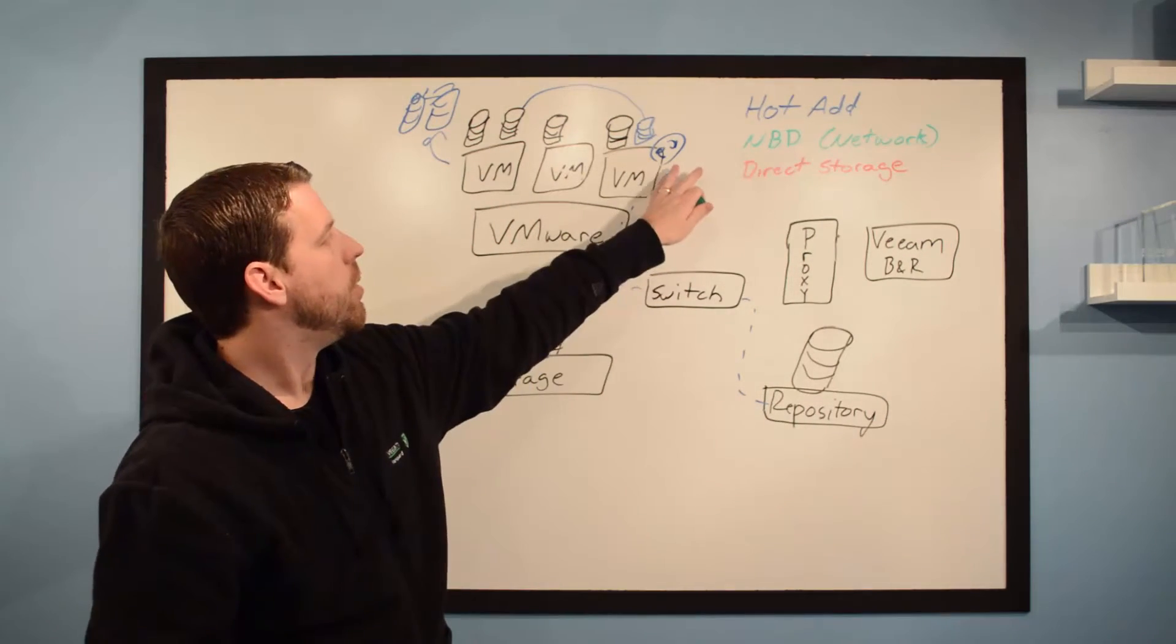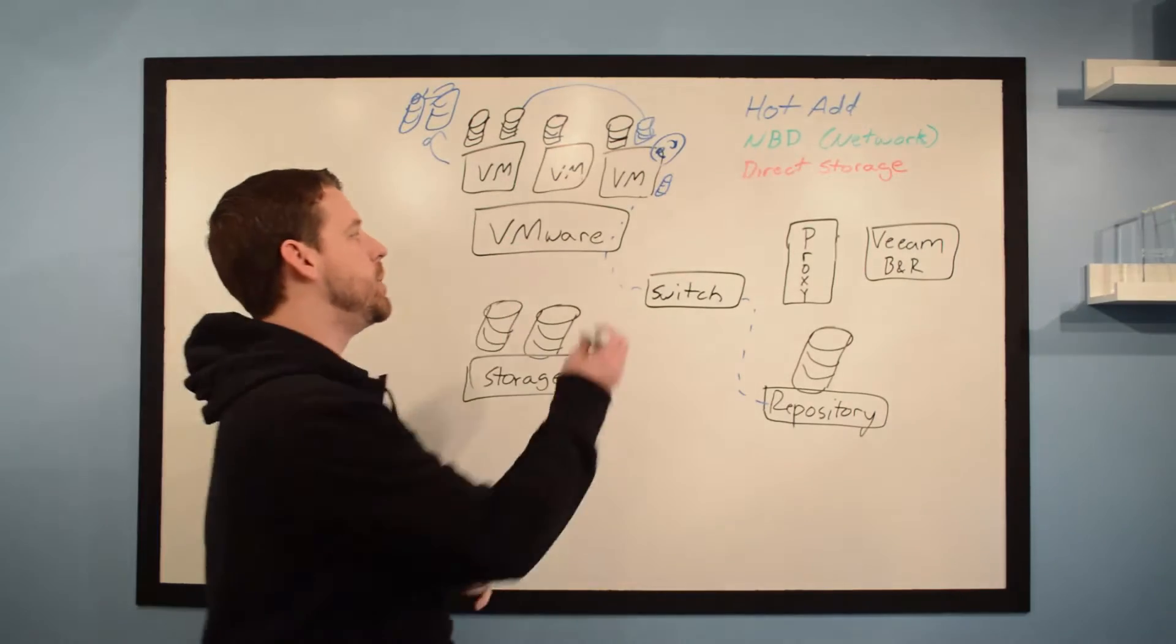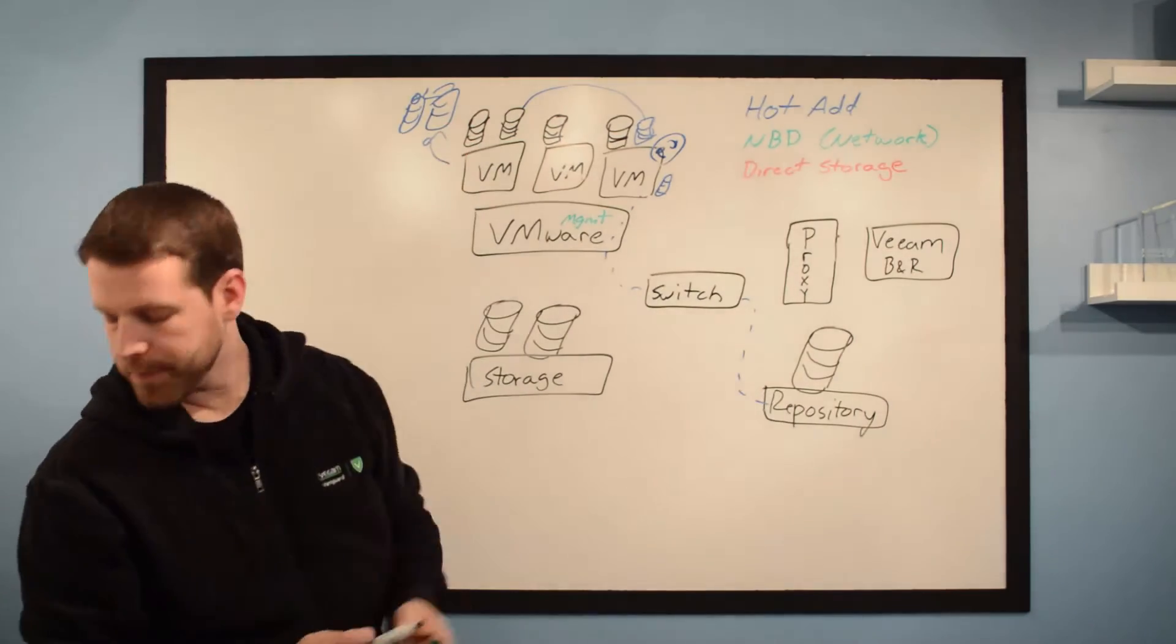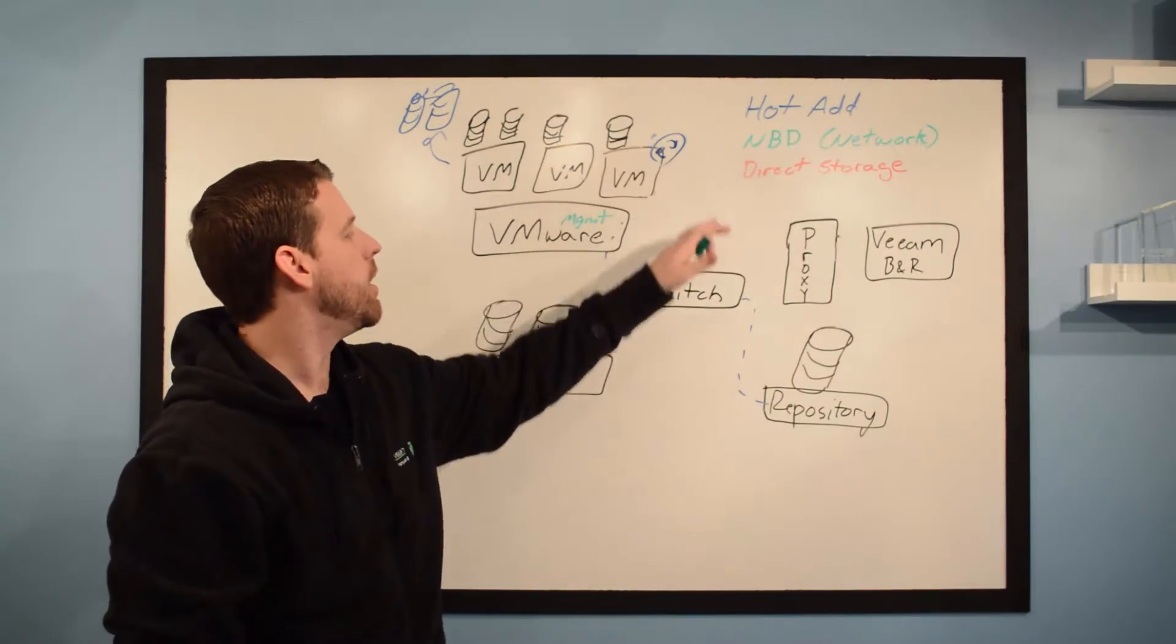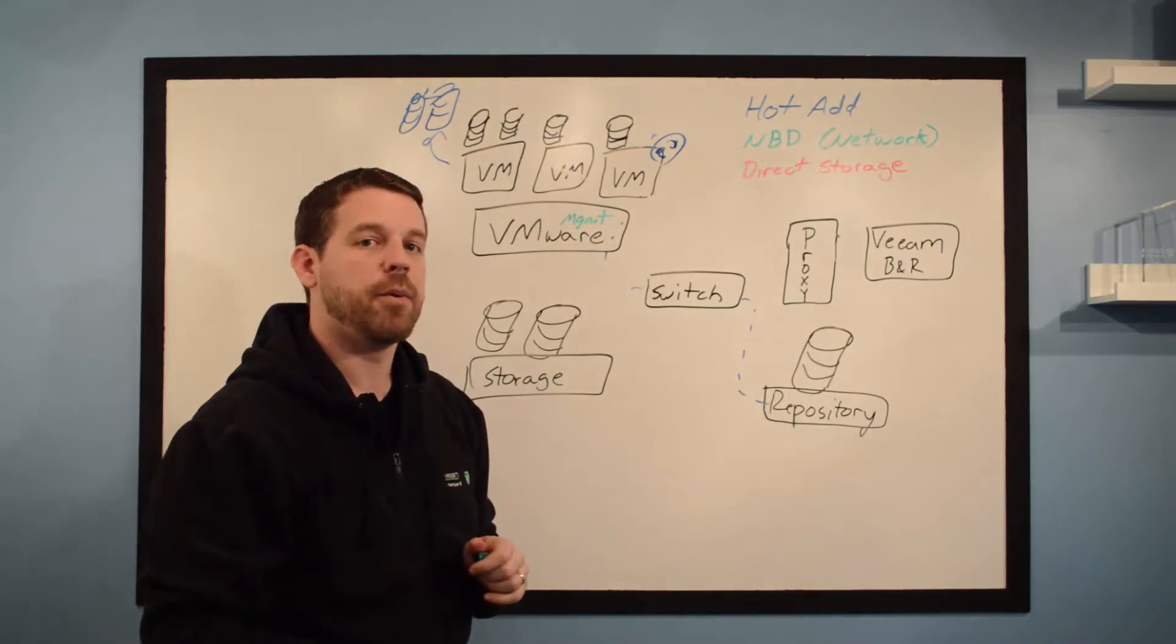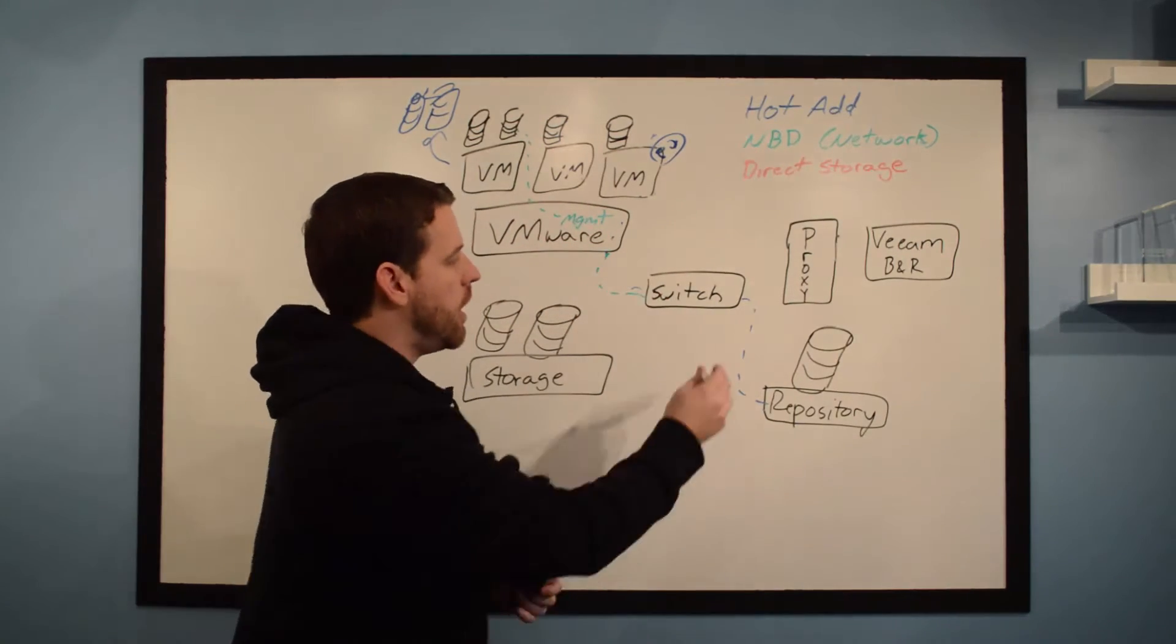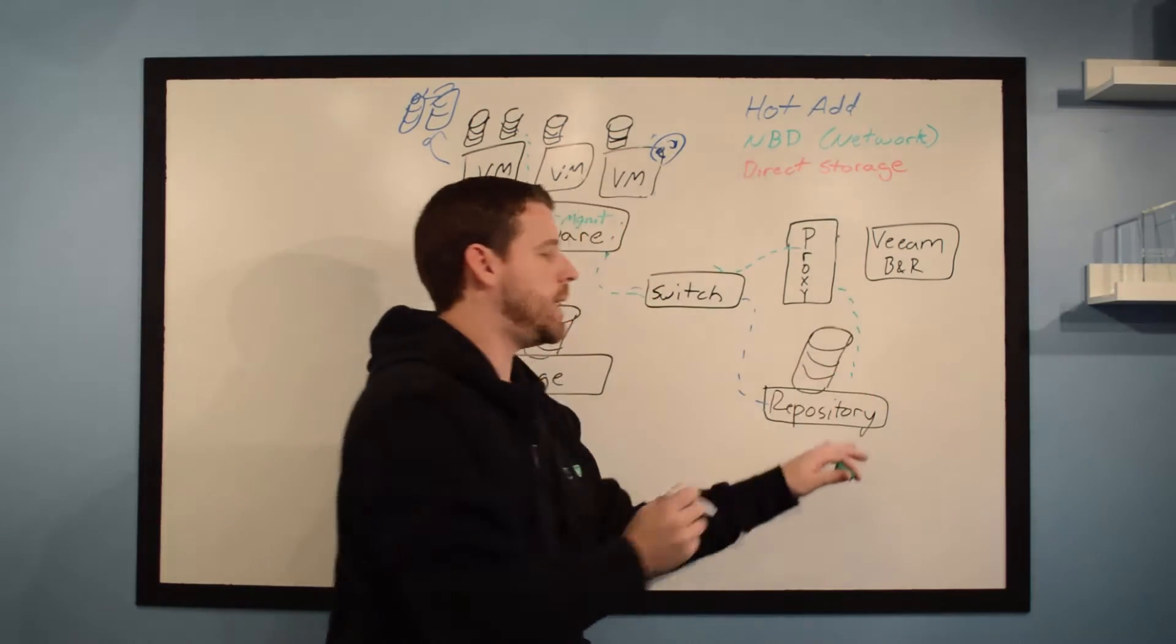With network mode, we can use a virtual or physical proxy. It doesn't matter. But what does matter is we're going to be using the management interface on our VMware hosts. So in this case, we'll have our physical proxy. We're still going to do our snapshots. We're not doing hot add, so we're not going to be mounting them there. We're going to take our snapshots. And then what's going to happen is we have access through VMware APIs to get to these original files. So the management interface in VMware is going to grab that and we're going to send it along to our switch out to our proxy. Our proxy then is going to do the deduplication and compression there and then send it on down to the repository.